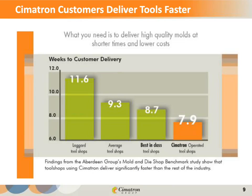According to a study done by the Aberdeen Group, shops that use Symmetron for both design and manufacturing are able to deliver tools quicker because of the concurrent approach. This chart shows 8.7 as best-in-class. Back in the 90s, companies would search out the best software for 2D design, surfacing, and cutter paths separately — that's best-in-class. But even with the best-in-class software, it's not as good as having an integrated system that's associative and allows concurrent working.